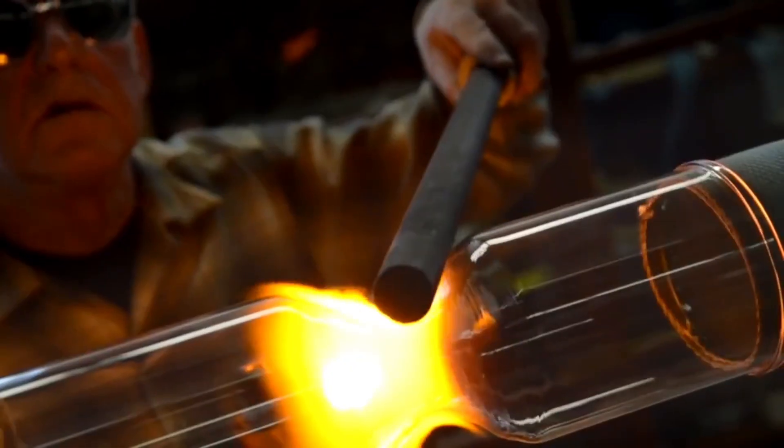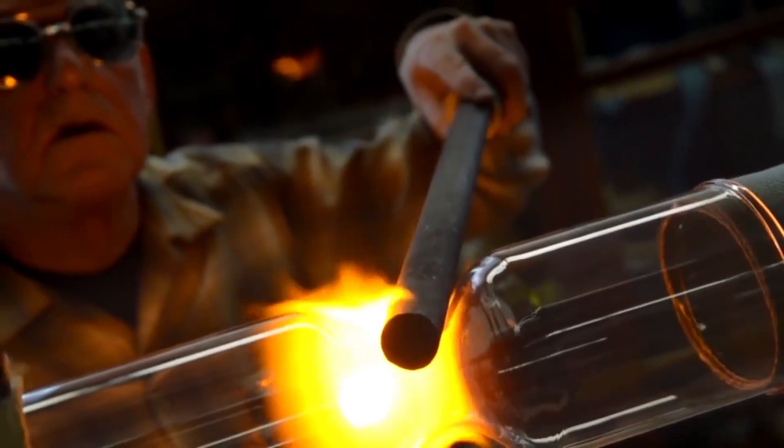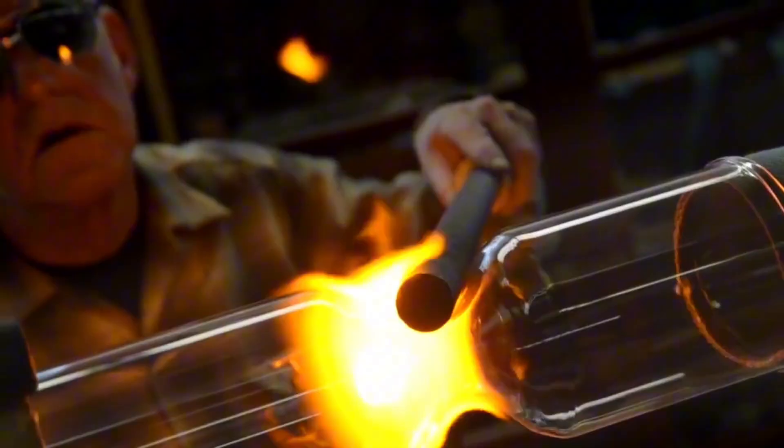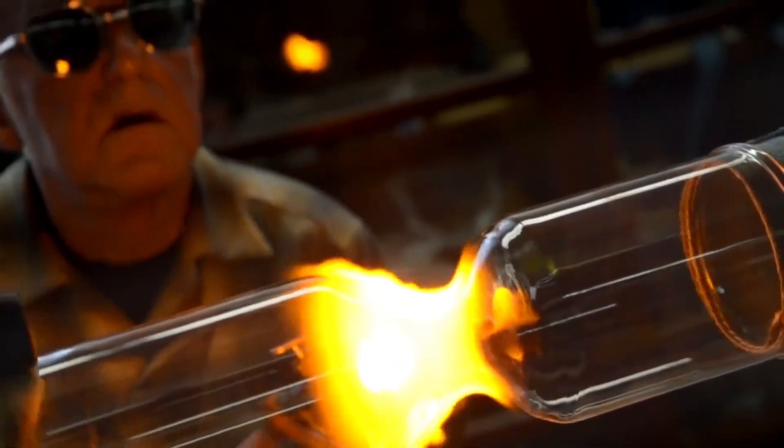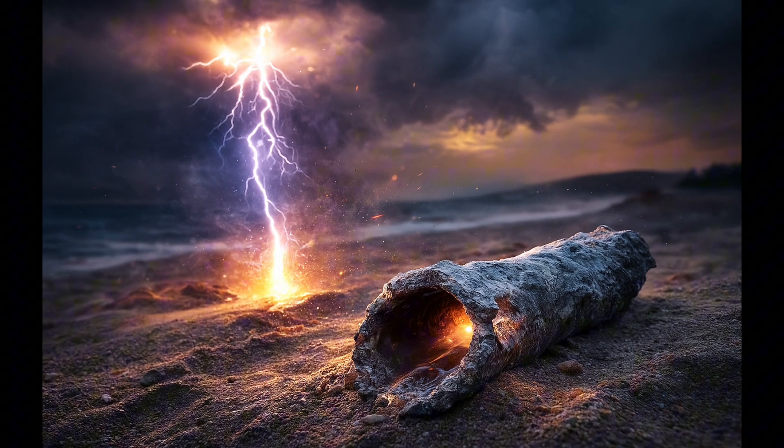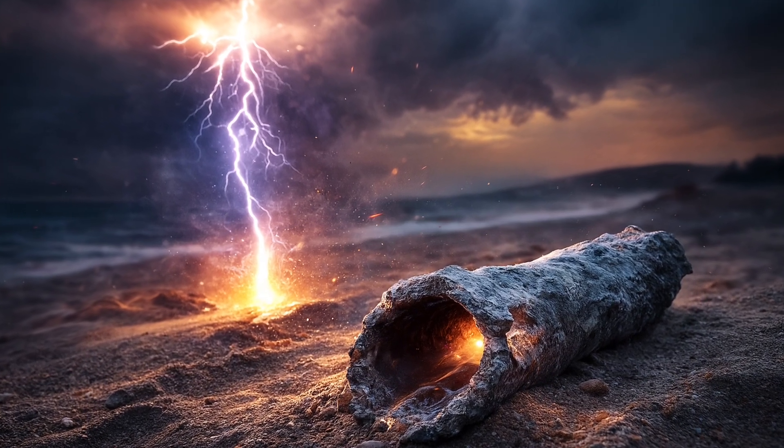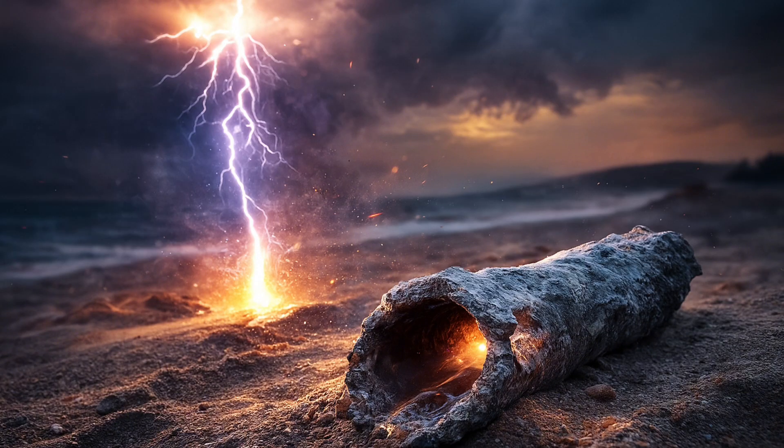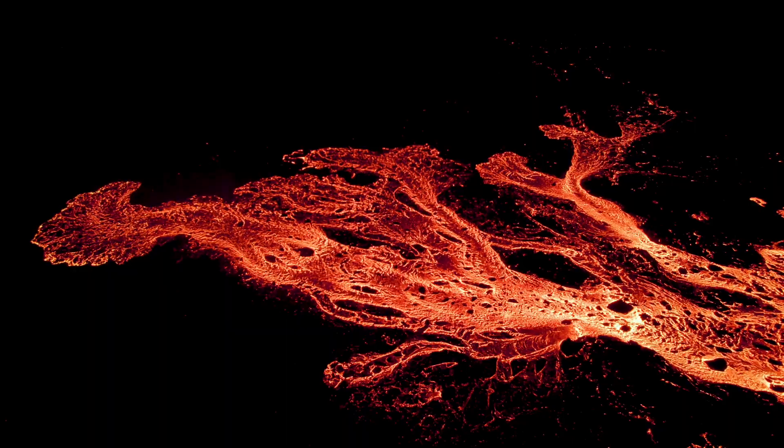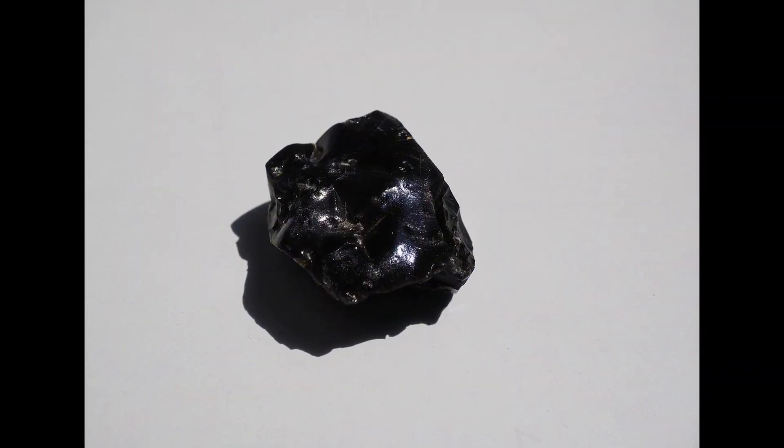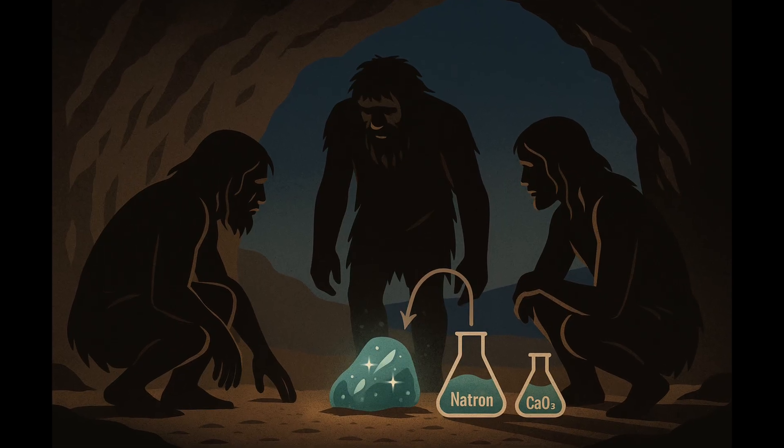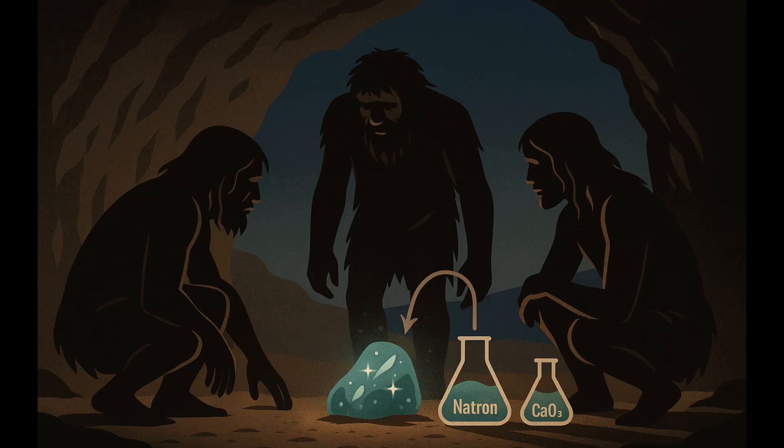This single discovery, that you can change the melting behavior of silica through chemistry, is what made glassmaking possible thousands of years before modern industry. But before humans intentionally created glass, nature did it first. When lightning strikes sand with enough intensity, the sudden heat melts the silica and carves out long, hollow tubes called fulgurites. Volcanoes do something similar, producing natural obsidian, a dark volcanic glass formed when lava cools too quickly for crystals to form. These natural examples were likely the first clues that sand could become something entirely new.